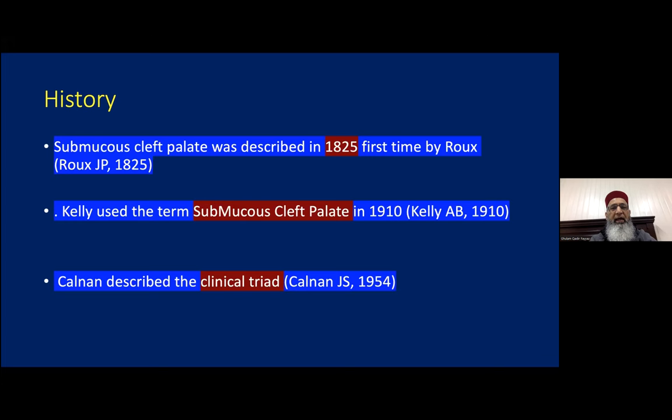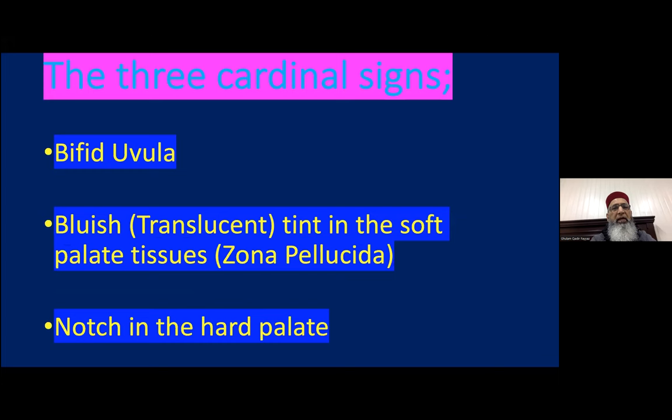Submucous cleft palate was first described in 1825 by Rogue JPE, and Kelly was the first person to use the term 'submucous cleft palate' in 1910. Kelly described the clinical triad: the bifid uvula, a bluish translucent tint in the soft palate tissue called the zona pellicida, and a notch in the hard palate.